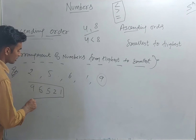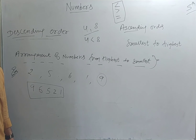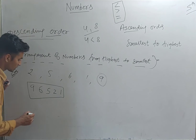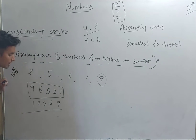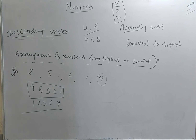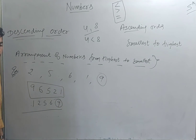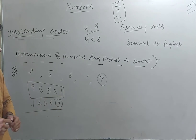If the question asks to arrange in ascending order, that is just the reverse of the descending order. So it becomes: 1, 2, 5, 6, 9. The descending order shows highest to smallest, and the ascending order shows smallest to biggest — going bigger and bigger up to the highest.